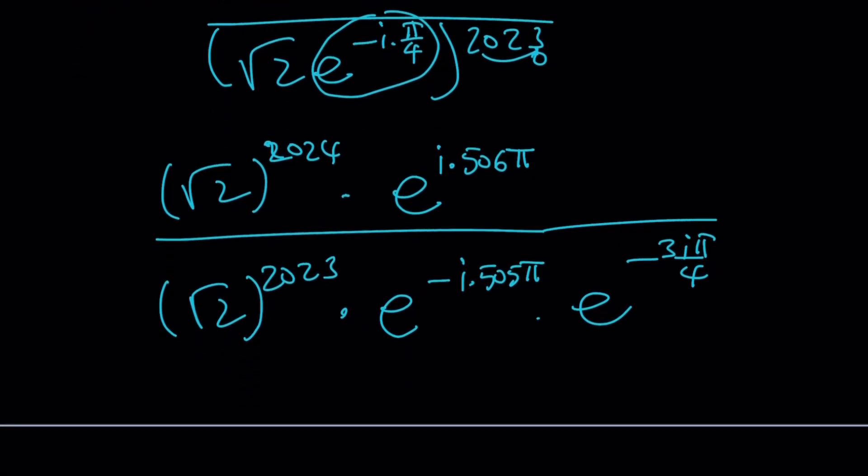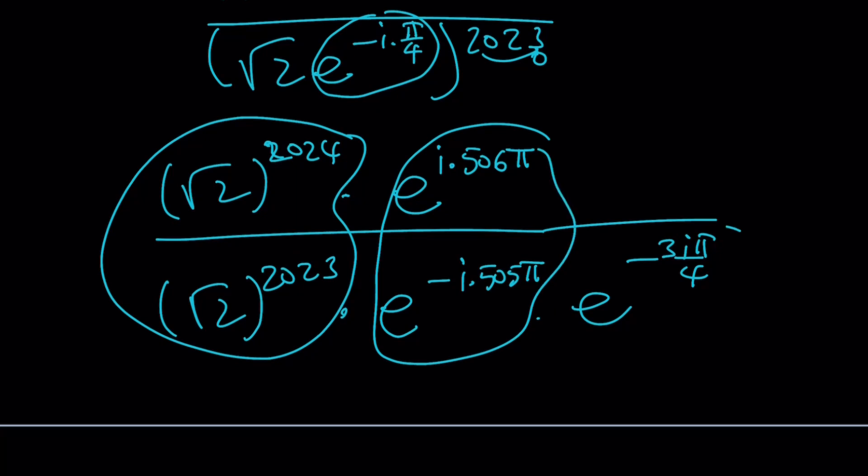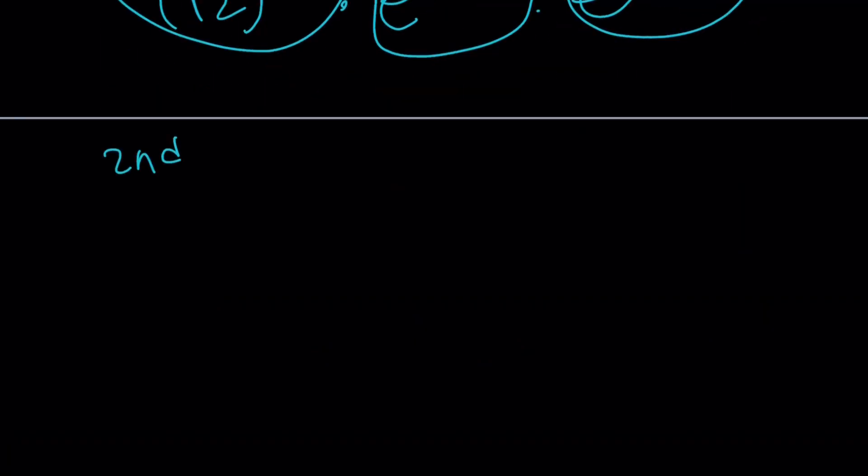And then you can go ahead and just separate the rest as e to the power negative 3i pi over 4. Because remember, we had a remainder, right? Great. Now, what do you do with this? This can be simplified, right? A great deal. And then this, you can basically subtract the exponent and we can evaluate it, right? You can definitely go ahead and do that. And since we're going to do this problem in more than one way, I'm just going to leave that as an exercise for you and continue with the second method.